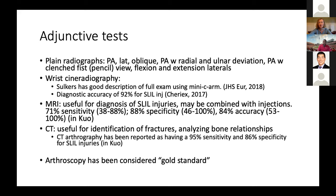In the references, Selkers has a really good description of a full exam, giving 92% accuracy for scapholunate interosseous ligament injuries. MRI is useful for diagnosis in unclear conditions — you can combine this with injection to see if dye is going where it shouldn't. CT can be useful for identification of fractures and analyzing bony relationships, but arthroscopy is considered the gold standard.